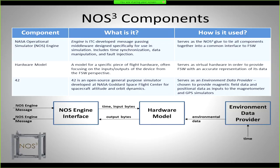We are currently using 42. If you're not familiar with 42, it's an open-source general-purpose simulator developed at Goddard for spacecraft attitude and orbit dynamics. Just Google it — it's available. We refer to 42 as an environment data provider. It serves to provide real-world position, attitude, location, and environment data that your CubeSat needs to know about.